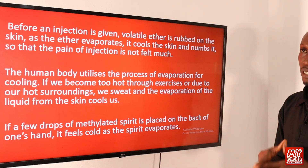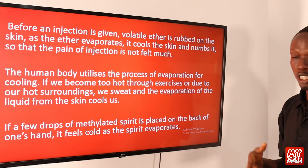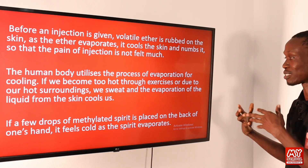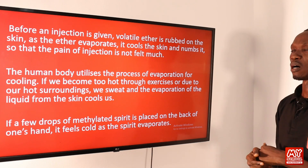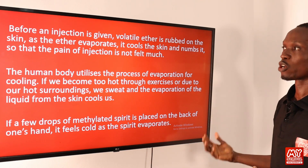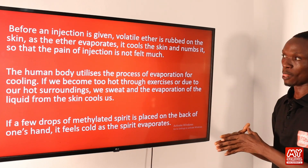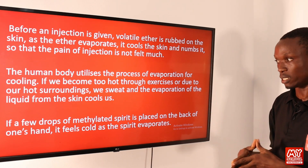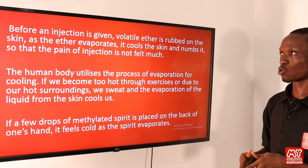Another example is that before an injection is given, volatile ether is rubbed on the skin. As the ether evaporates, it cools the skin and numbs it so that the pain of the injection is not felt much. The human body also utilizes evaporation for cooling — when we become too hot through exercise or hot surroundings, we sweat, and evaporation of the sweat from the skin cools us. Similarly, if a few drops of methylated spirit are placed on the back of one's hand, it feels cool as the spirit evaporates. These observations demonstrate the cooling effect of evaporation. Whenever a liquid is converted to vapor, heat is absorbed from the liquid or anybody in contact with it — this heat is called the latent heat of evaporation.